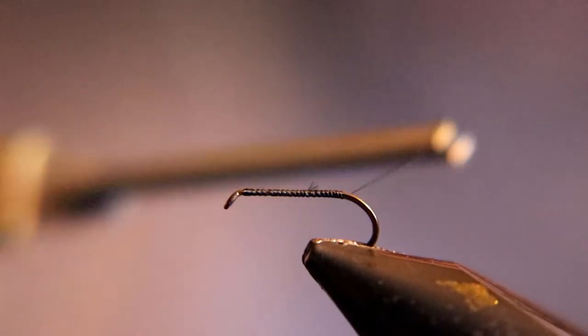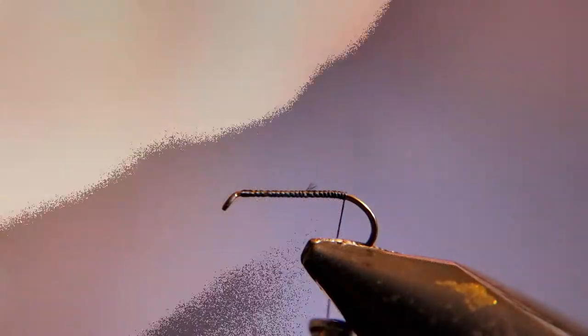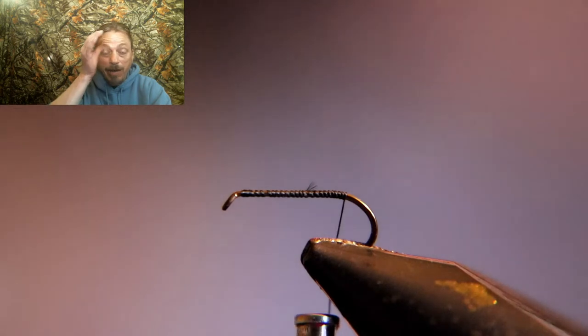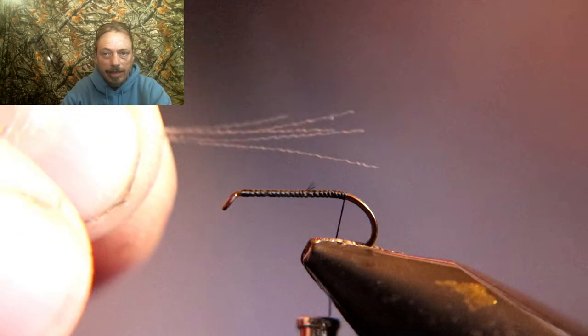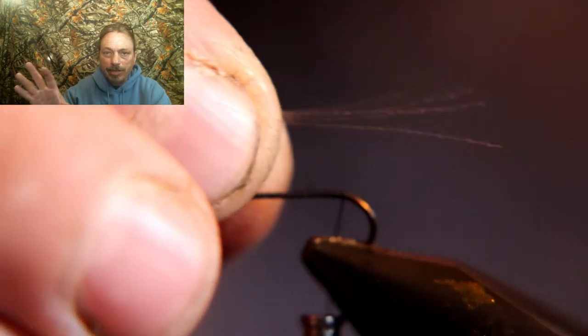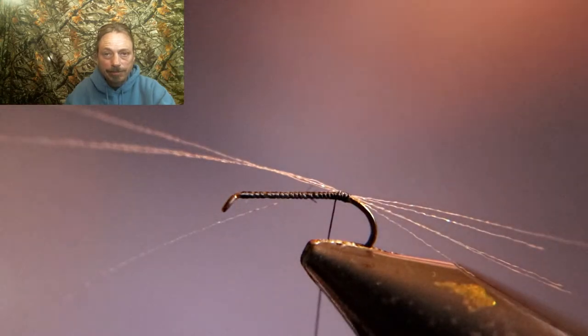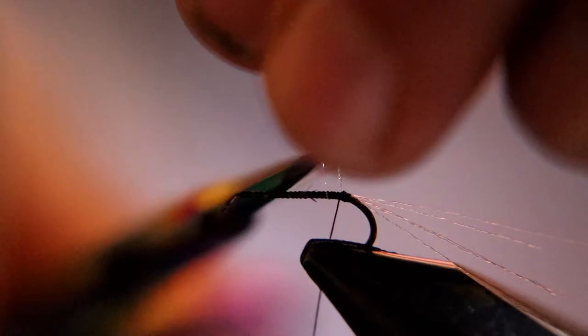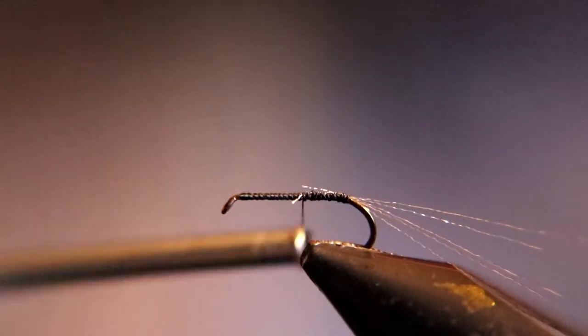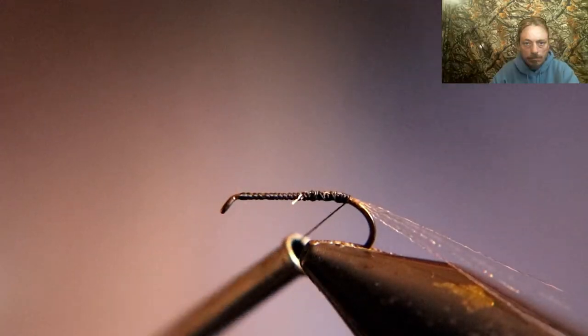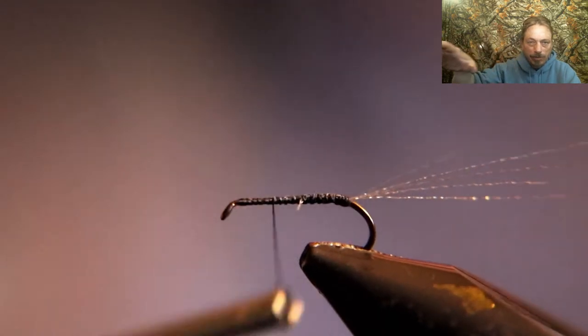Now we're going to use organza for the tail. I used about five fibers, and we're going to measure them and make them longer than the shank of the hook - about a shank and a half. I noticed these spinners coming down, their tails seemed to be a little bit longer than normal and they were a clear, opaque color, so this organza will do a good job of imitating the tails. One thing I like to do different is I put one thread wrap underneath the tail and it makes it stick up at an angle. That's kind of how they look when they're dead, floating down on top of the water.